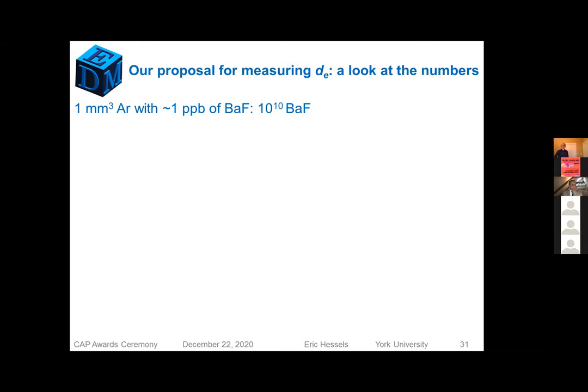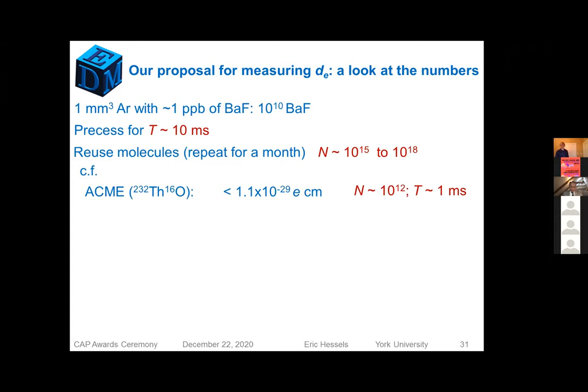The molecules end up being oriented perpendicular to the cube faces, and that means we don't need an electric field to orient our molecules. We can get large numbers of molecules and precession times of somewhere between a millisecond and a second should be possible. So how many molecules can we get? Well, we think that we can make a millimeter cubed of argon, a part per billion of barium monofluoride in it, something like 10 to the 10 barium monofluoride molecules. If we watch the process for about 10 milliseconds, and then we reuse the molecules, do that for a month, we will effectively study somewhere between 10 to the 15 and 10 to the 18 electrons, depending on how quickly we can reuse each molecule. So rather than the 10 to the 12 that ACME had, we have 10 to the 15, and we can also study them for longer time. That gets us down to statistical limits of, we hope, as good as 10 to the minus 31 or 10 to the minus 33 centimeters.